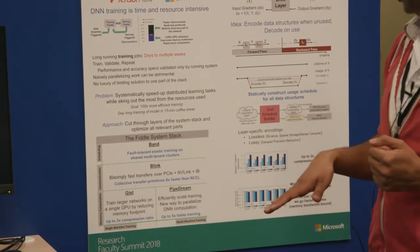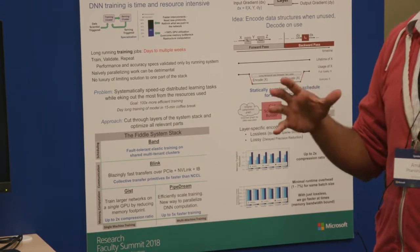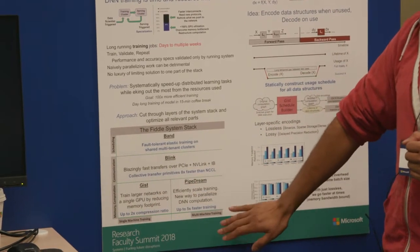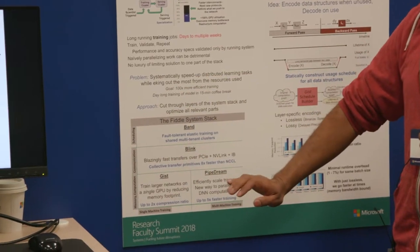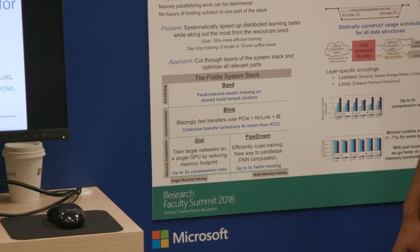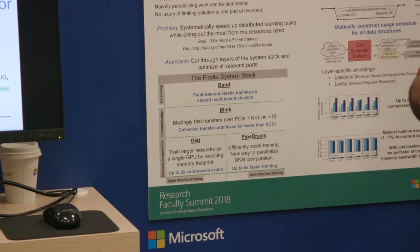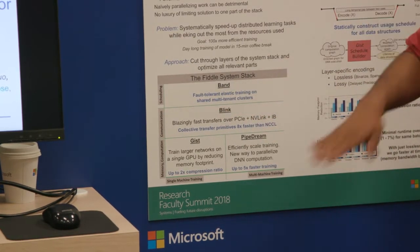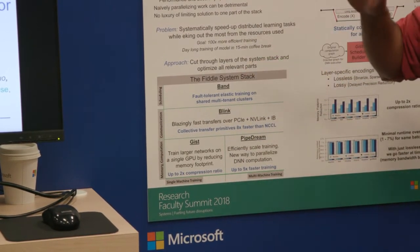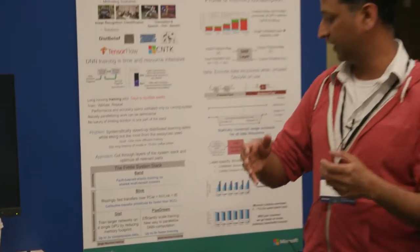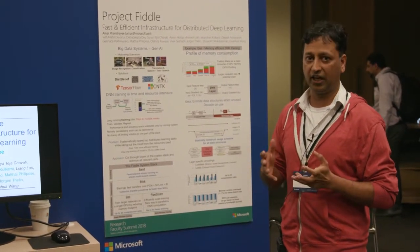The approach we take in Project Fiddle is to cut across the system stack. We look at training the bigger picture of training from a single GPU all the way up to multi-GPU, multi-machine clusters across the system stack. We look at the memory subsystem, how to structure computation across these different computational units, the communication infrastructure, speeding up communication which is inherent in this workload. And then finally, all the way up the stack, I've been talking about these innovations that help a single job, but we look at multiple jobs all using the same cluster running in this multi-tenant clustered environment. We're looking at techniques to make fault-tolerant elastic training work on these clusters.